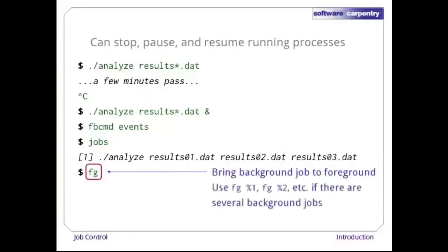If we have several jobs running in the background, we can control which one we bring to the foreground using fg%1, fg%2, and so on. The IDs are not the process IDs — instead, they are the job IDs displayed by the jobs command.